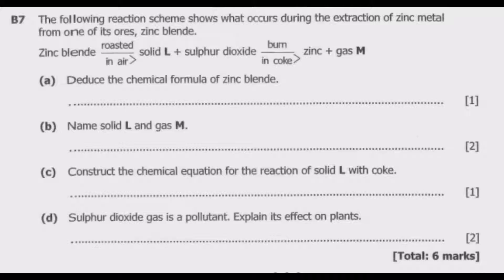So basically what happens is zinc blende is heated strongly or roasted in air to convert it to zinc oxide. When we are talking about zinc blende, zinc blende contains zinc sulfide. So zinc sulfide is what is basically zinc blende.